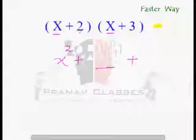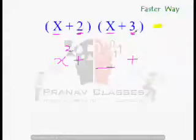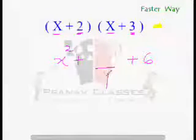Now multiply the last term with the last term to get the last term of your answer. So, 2 times 3 is 6. Now, how do you get the middle term?